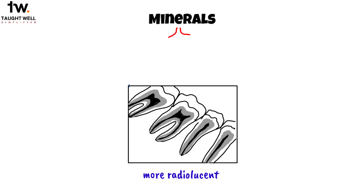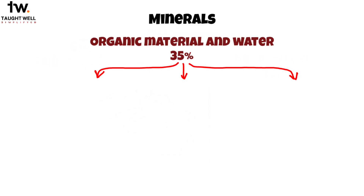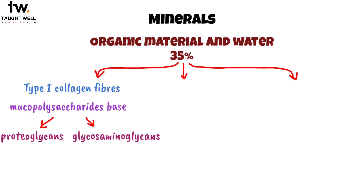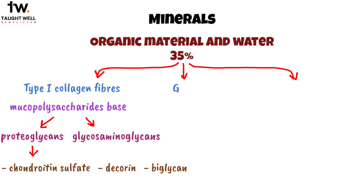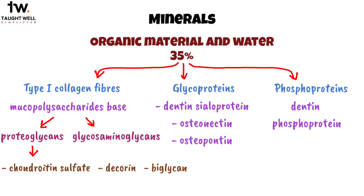Dentin is made up of about 35% organic material and water and 65% inorganic material. The living part of dentin is mostly made up of collagen fibers, mainly type 1 collagen. These fibers are embedded in a base of mucopolysaccharides, also called proteoglycans and glycosaminoglycans. Some important proteoglycans in dentin are chondroitin sulfates, decorin, and biglycan. Dentin also has important glycoproteins like dentin sialoprotein, osteonectin, and osteopontin, as well as phosphoproteins like dentin phosphoprotein.